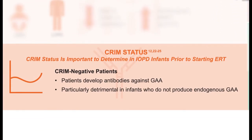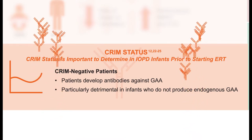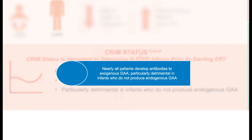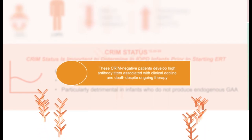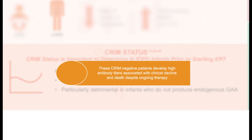Throughout work in Pompe disease, it became clear that nearly all patients develop antibodies to their recombinant protein and that their cross-reactive immune material, or CRIM, status is a determinant in their ability to develop high antibody titers. In particular, there is a cohort of patients determined to be CRIM-negative — they have no cross-reactive immune material pre-infusion — and they are prone to developing high antibody titers to the recombinant enzyme, which are associated with clinical decline despite ongoing therapy.